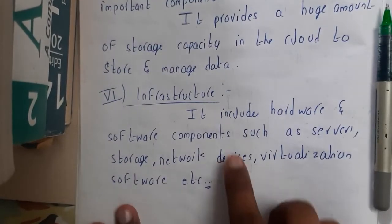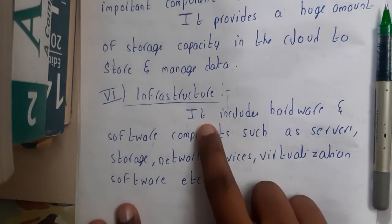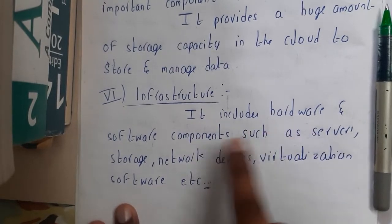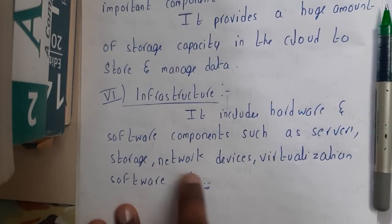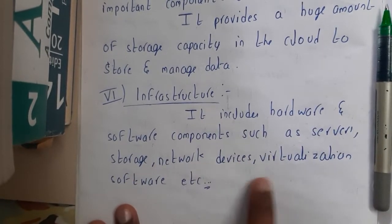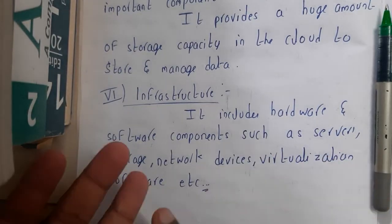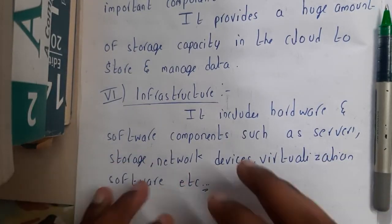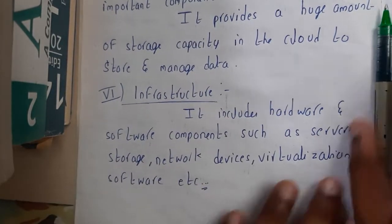Infrastructure — the last component — includes hardware and software components such as servers, storage, network devices, virtualization software, etc. Basically, your RAM, virtual machines, and everything will be considered here in the infrastructure component.